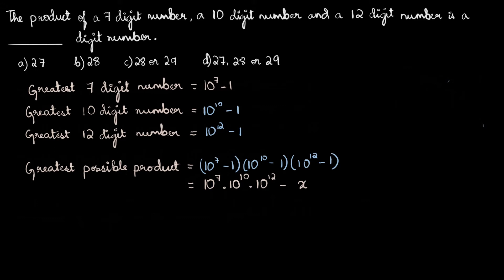We can write this product as 10^7 times 10^10 times 10^12 minus some number x, giving us 10^(7+10+12) minus x, which is 10^29 minus x. Now 10^29 has 30 digits — it's 1 followed by 29 zeros. The question is: how many digits does 10^29 minus x have?